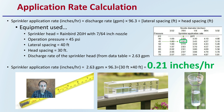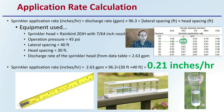The application rate calculation: when looking at the sprinkler application rate, inches per hour equals the discharge rate in gallons per minute times 96.3, divided by the lateral spacing in feet times the head spacing in feet.